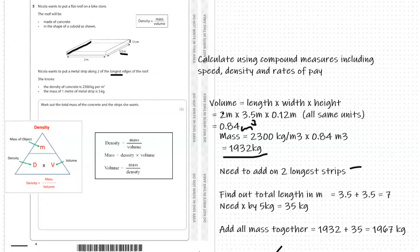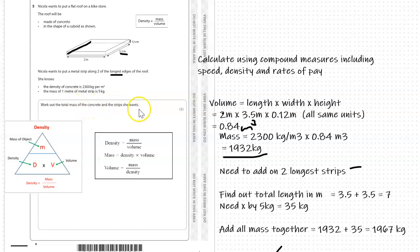Then we add all the masses together to work out the total mass of the concrete and the strips. So the total answer is 1967 kilograms.